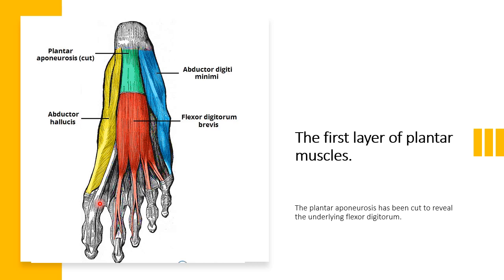The second muscle is abductor digiti minimi, located on the lateral side — similar to the abductor digiti minimi of the hand. The origin is the medial tubercle of the calcaneum and the plantar aponeurosis. It inserts at the lateral base of the proximal phalanx of the 5th digit. The action is abduction and flexion of the 5th digit. Nerve supply is the lateral plantar nerve.